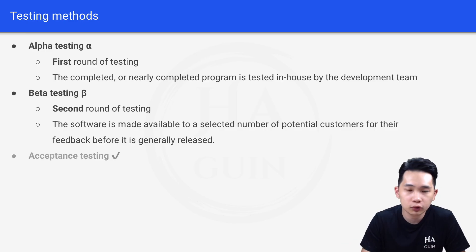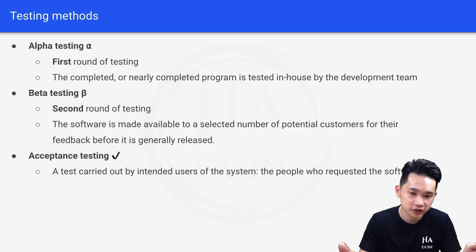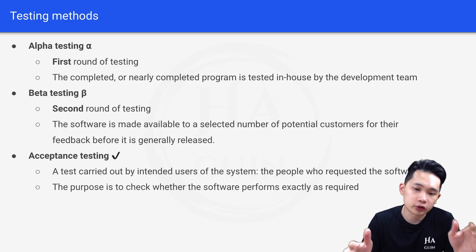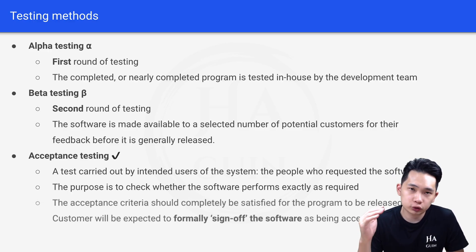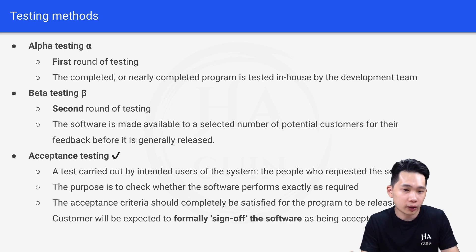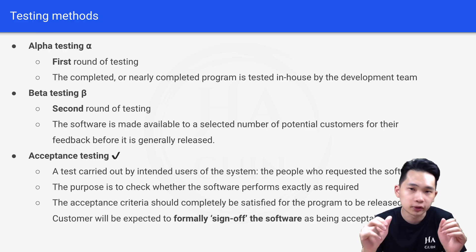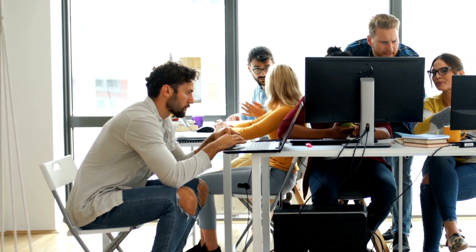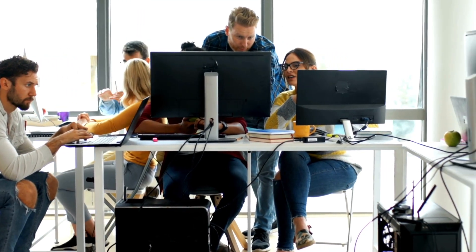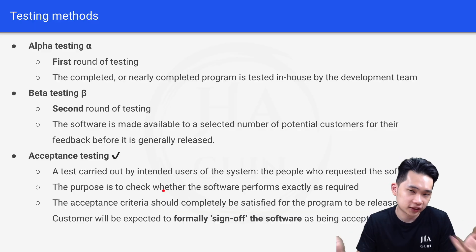Lastly, there is acceptance testing. A test is carried out by the intended users of the system — the people who requested the software — to check whether the software performs exactly as required. The acceptance criteria must be completely satisfied before the program is released to the general public, and the customer is expected to formally sign off the software as acceptable.